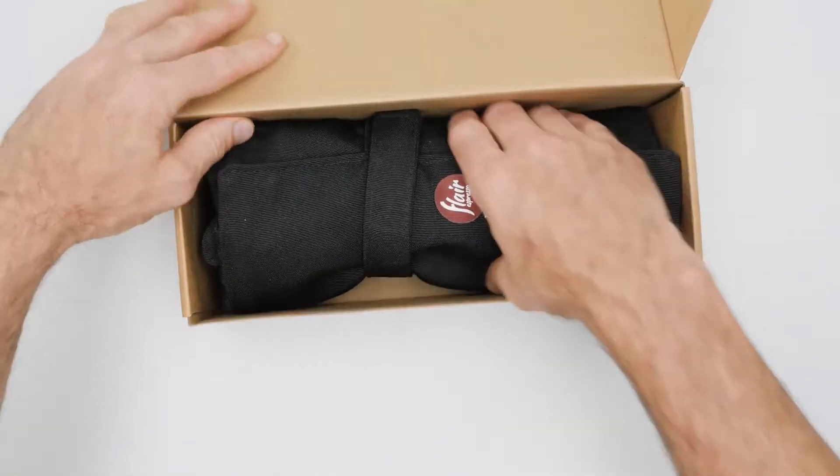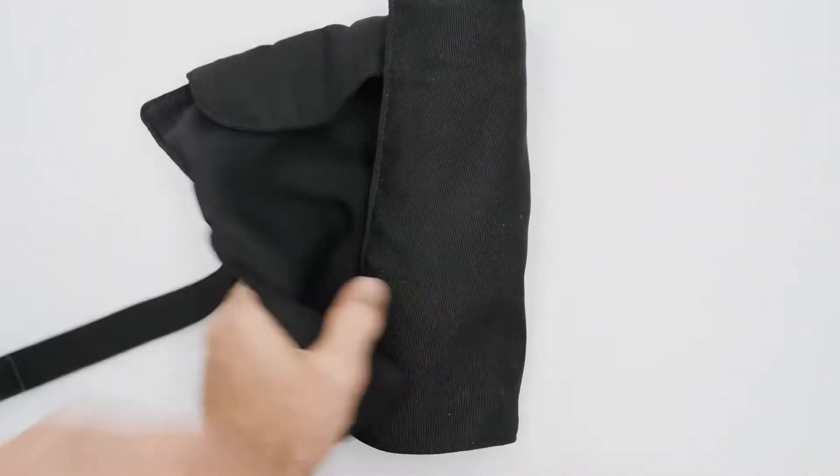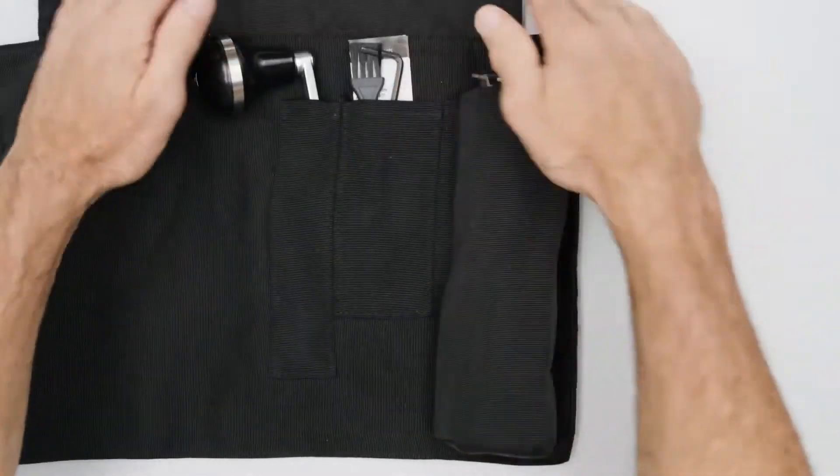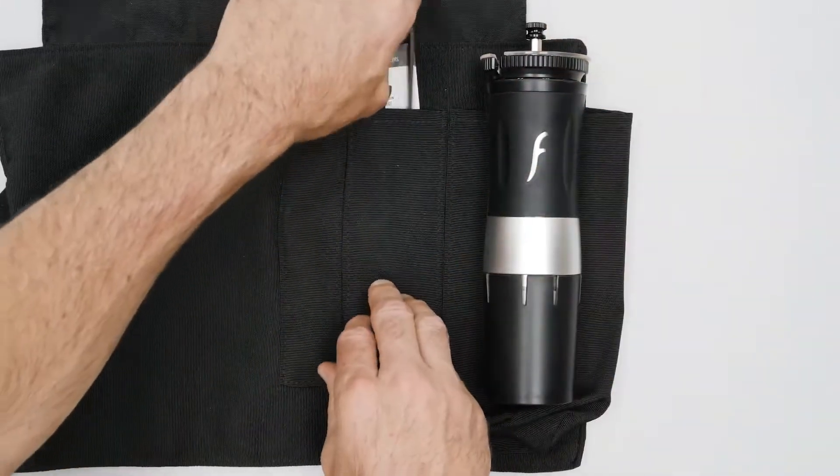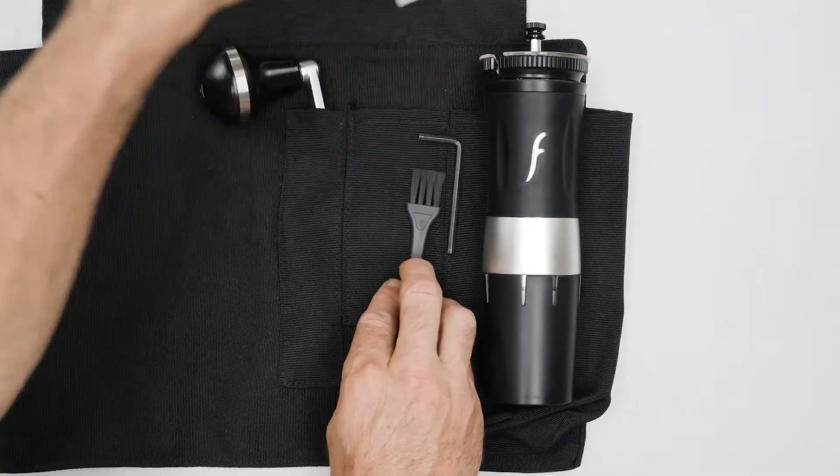The Royal Grinder from Flair Espresso comes with a custom roll bag to make traveling easier and provide storage for tools when you're not. There's a pocket for the grinder, another for tools and manual, and a third to store the crank handle.